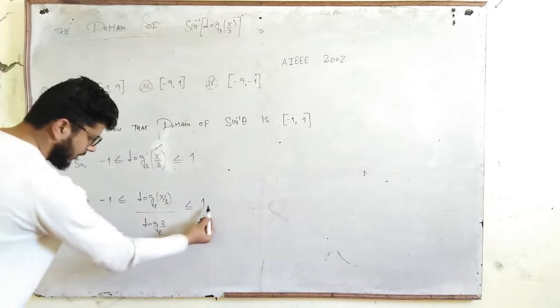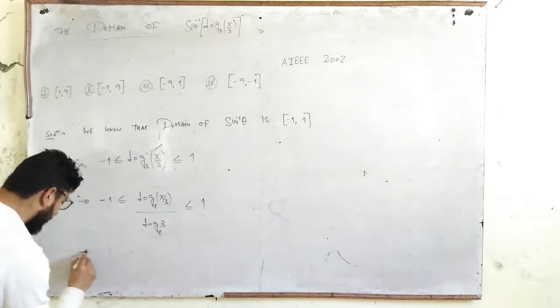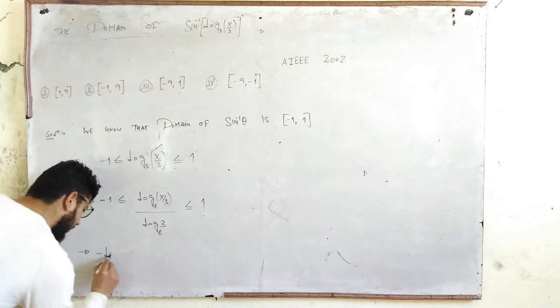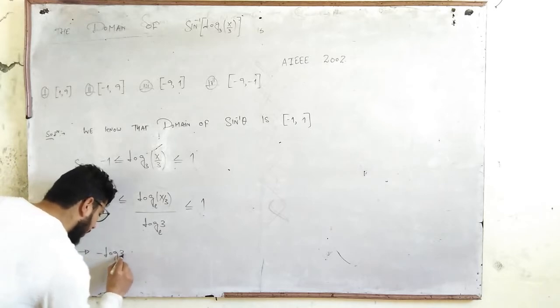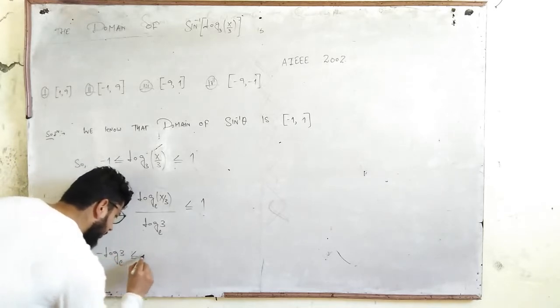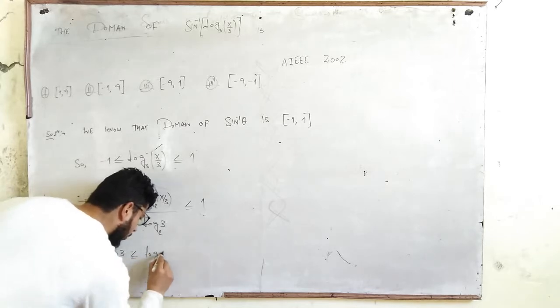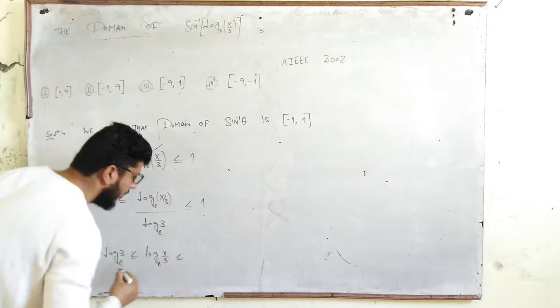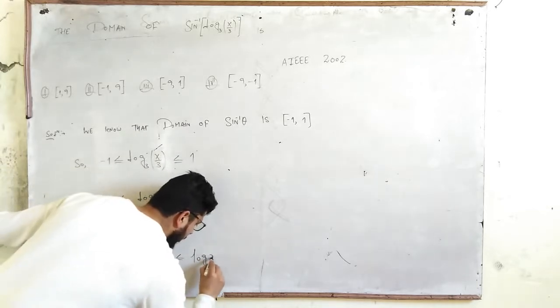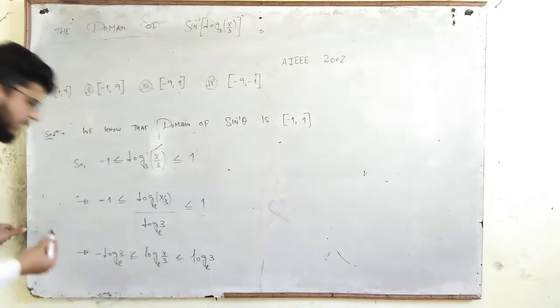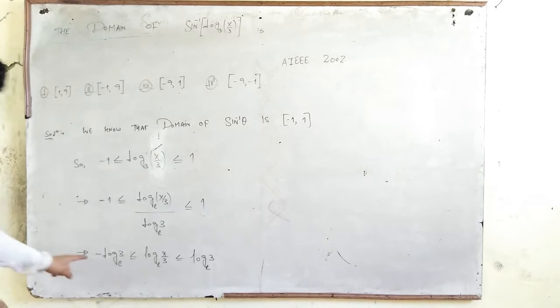Multiplying by ln(3), you will get -ln(3) ≤ ln(x/3) ≤ ln(3).